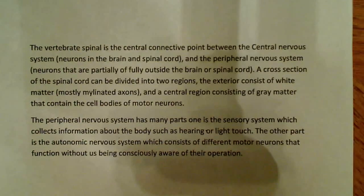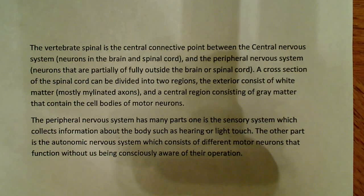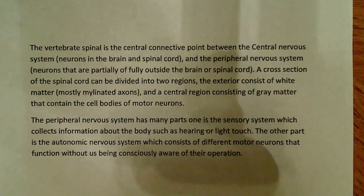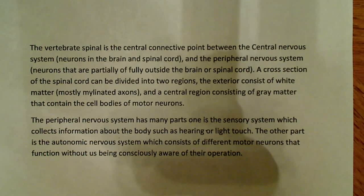The vertebrate spinal cord is the central connective point between the central nervous system — neurons in the brain and the spinal cord — and the peripheral nervous system, which consists of neurons partially or fully outside the brain or spinal cord. A cross-section of the spinal cord can be divided into two regions: the exterior consists of white matter, mostly myelinated axons, and the central region consists of gray matter containing the cell bodies of motor neurons.